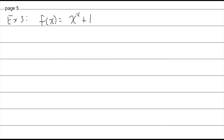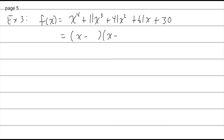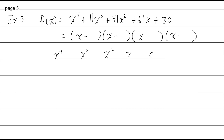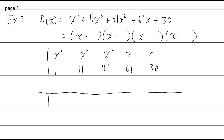Let's do one more example to finish section 4.3. Factor the polynomial x to the fourth plus 11x cubed plus 41x squared plus 61x plus 30. I'm putting four sets of parentheses because it's a fourth-degree polynomial. Coefficients are 1, 11, 41, 61, and 30. Since they're all positive, I'm not going to bother plugging in positive numbers — I'll start with negative 1.